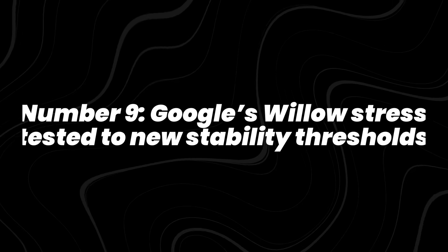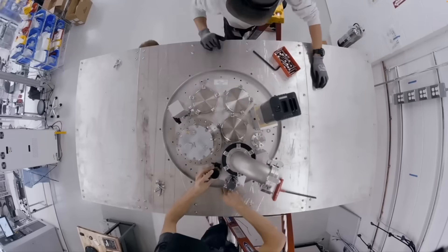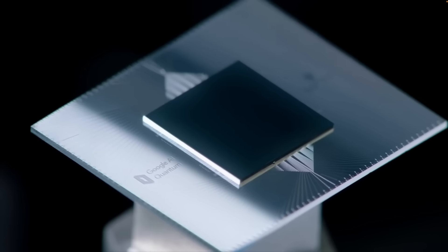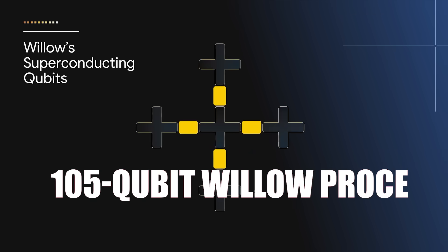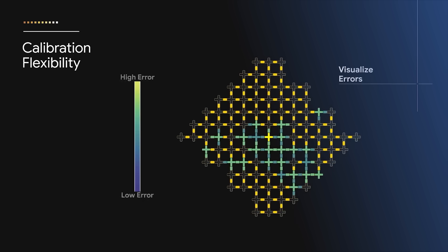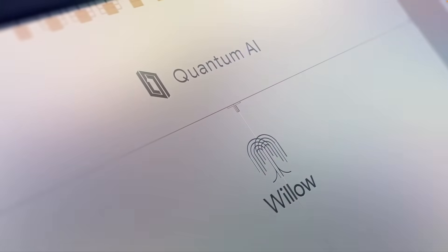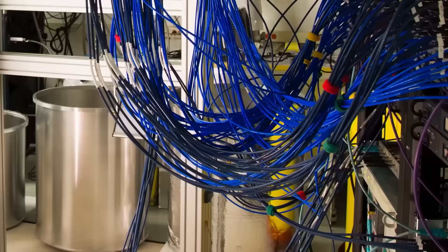Number 9. Google's Willow stress-tested to new stability thresholds. Quantum chips are extremely sensitive. They only work inside refrigerators colder than outer space. A tiny vibration or temperature change can break the entire computation. In 2025, Google pushed its 105-qubit Willow processor through long, repeated stress tests to see if it could stay stable. The chip held coherence through extended sequences of operations and thousands of experiment cycles.